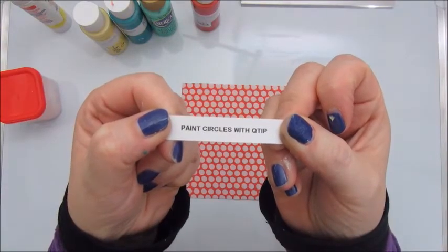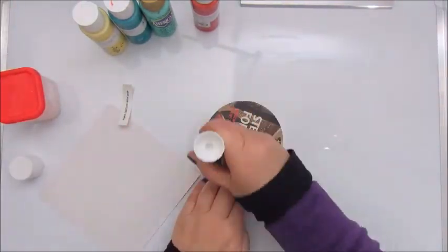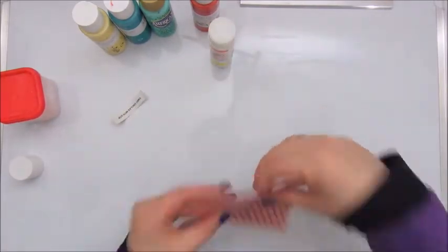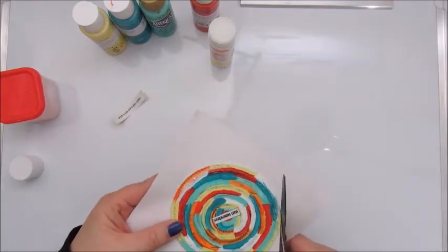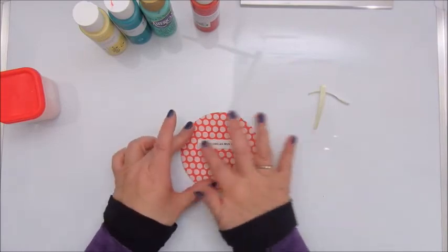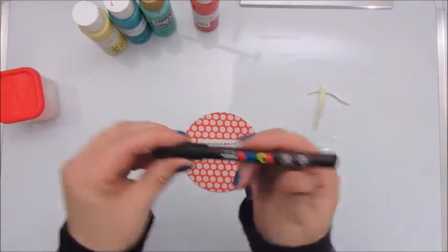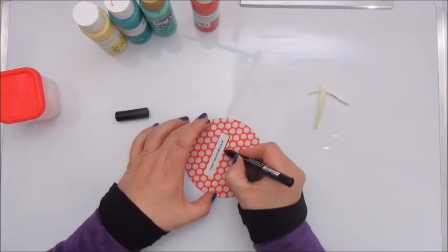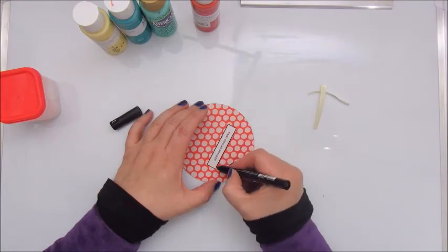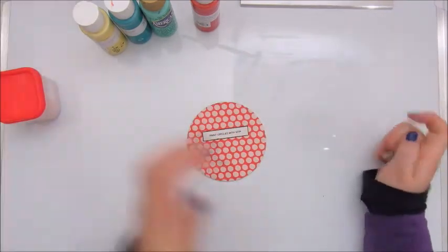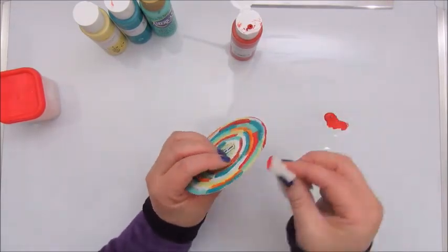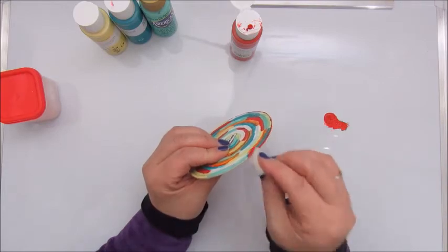I coated it with a mod podge to seal it properly and give it a bit of a shiny coat. And because I am going to make these my prompt cards as well, my inspiration prompt cards, I glue a piece of scrapbook paper on the back side and I am adding the quote. Paint circles with Q-tips. That is my prompt for this card. So now I am outlining the prompt and I am using the red acrylic paint for painting the edges of this prompt.